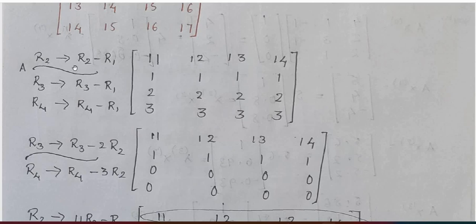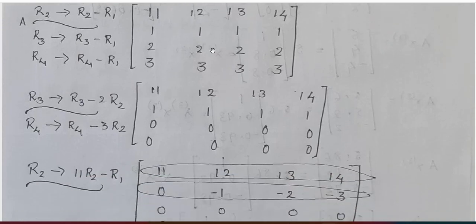The operations are: R2 changes to R2 minus R1, R3 changes to R3 minus R1, and R4 changes to R4 minus R1. This is the matrix I got. Next, I am going to affect rows R3 and R4 by using R2.